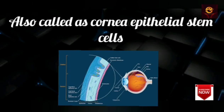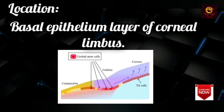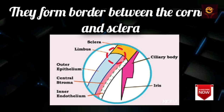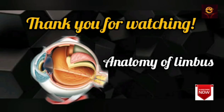Limbal stem cells: Limbal stem cells are also known as corneal epithelial stem cells. These are located in the basal epithelium layer of the corneal limbus, and they form the border between the cornea and the sclera.